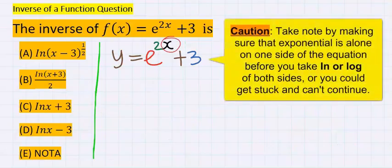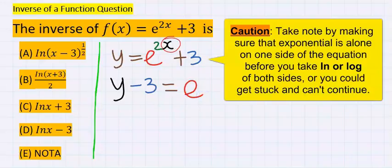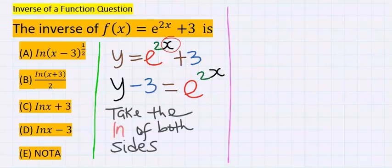However, before you take the natural log of both sides, take the +3 across so that it becomes -3. This will ensure that only the exponential is on its own on the other side.